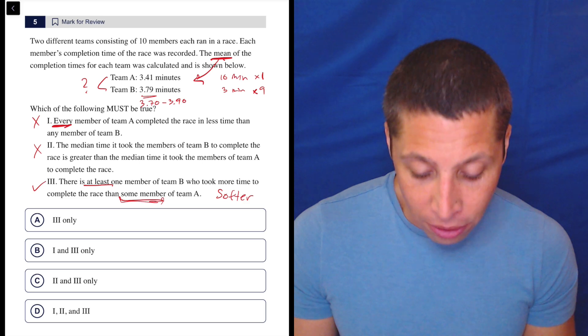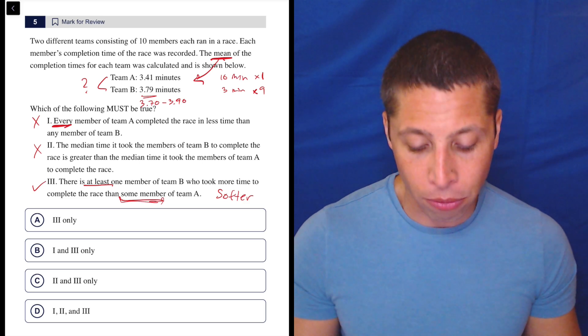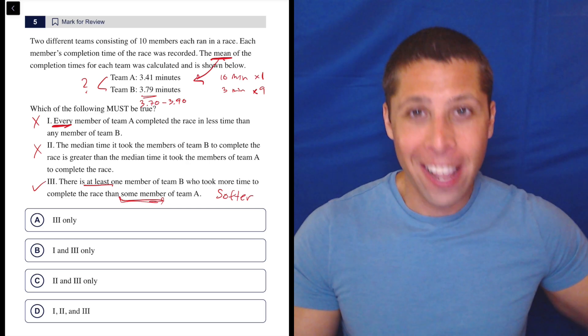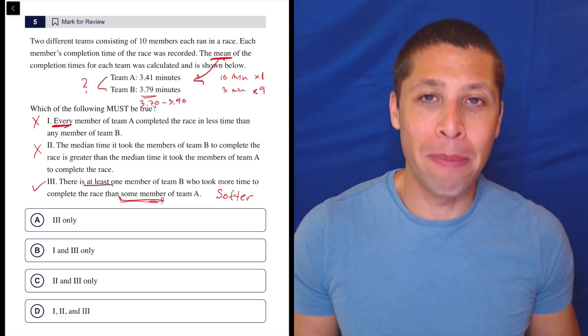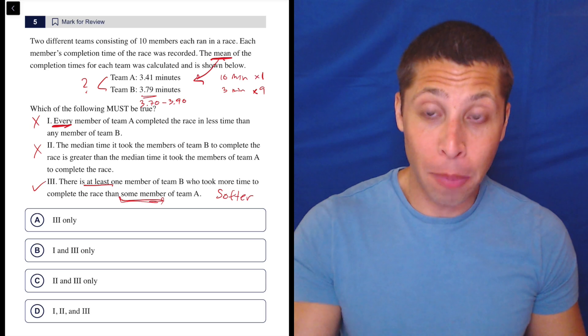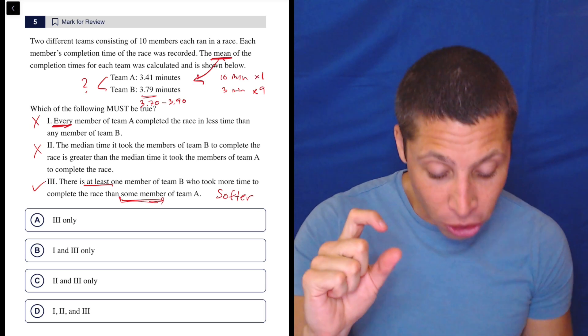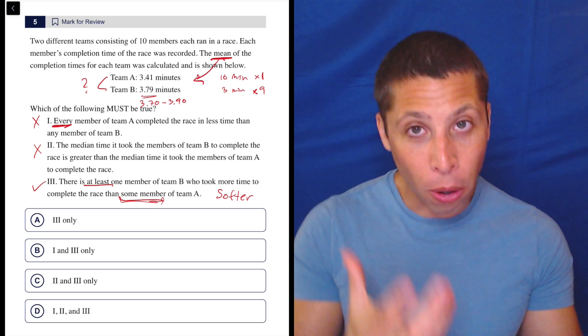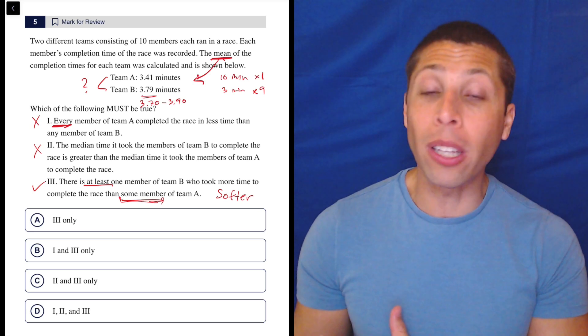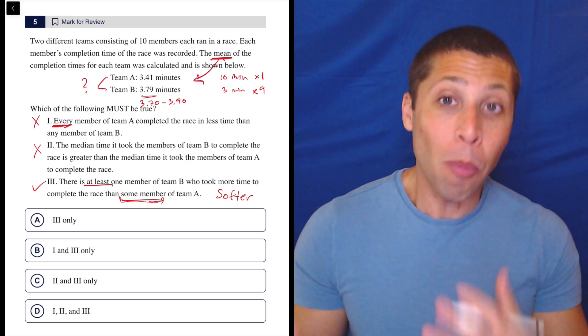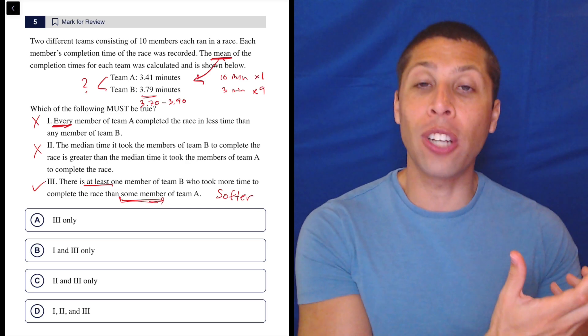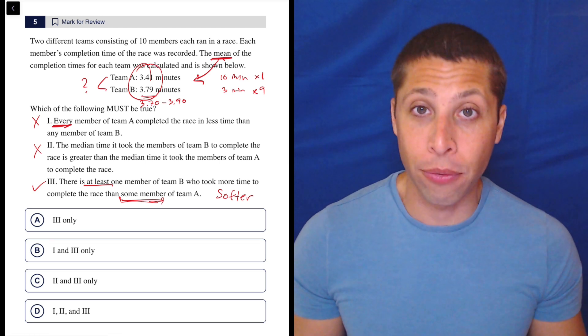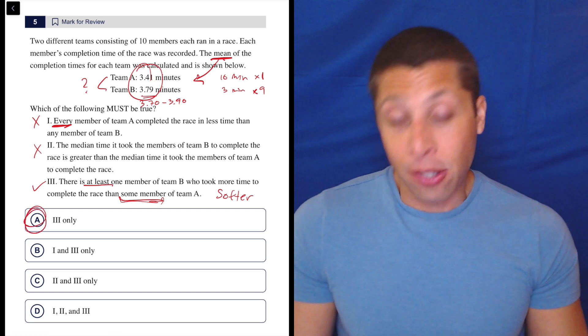So yes, that has to be the case. Now notice though, there could still be a person in Team A that is even slower than this very slow person in Team B. But choice three allows for this because it allows that there's just some member of Team A who is faster. That's just how averages work. There must be someone who's pulling that average down, being really fast in Team A. And there must be someone in Team B who's pulling that average up. Those two things have to be true in order for these two numbers to be this different. And that's what choice three is allowing. So A is the answer.